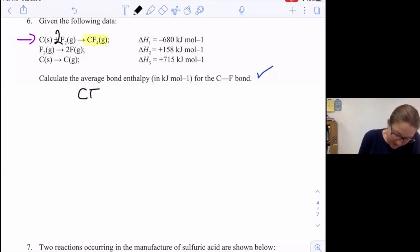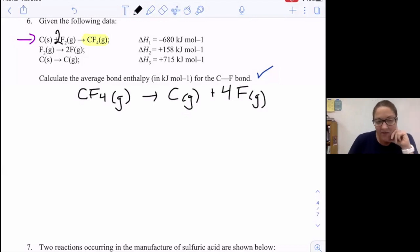If I were to write a bond enthalpy equation for this, I'd be going from CF4 gas to carbon gas plus four fluorine gas molecules. This is going to be four times the bond energy. So really my goal reaction is one fourth of that because that would be for just breaking one bond.